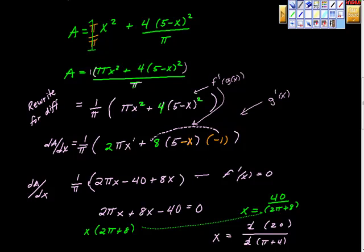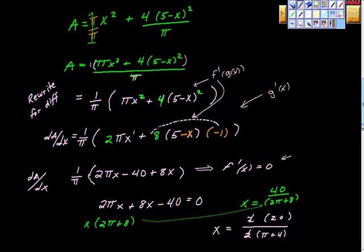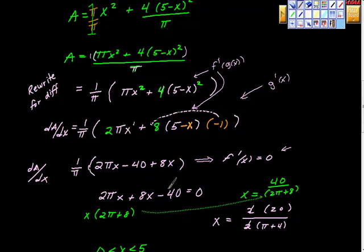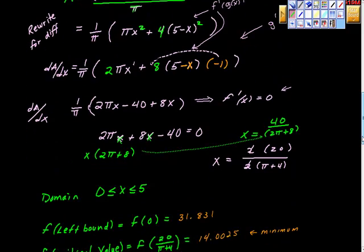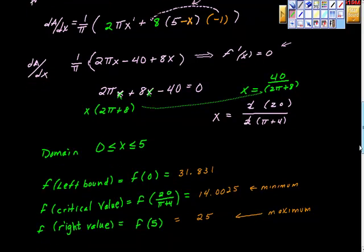Setting the derivative equal to zero, I moved the -40 term over as positive 40. Then I divided by (2π + 8). I factored out x from both terms in the numerator - they share x as a common factor - so here's x with the coefficient. After simplification, I found the critical value of x. I was really excited and thought I was done, but then I realized there could be another issue.